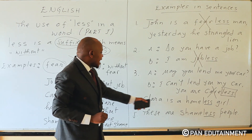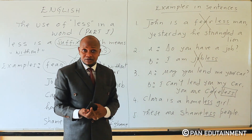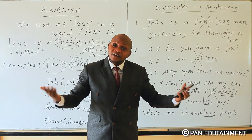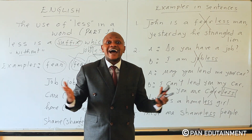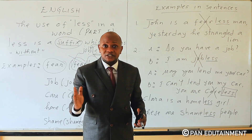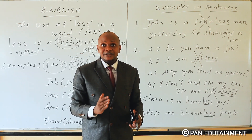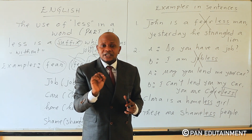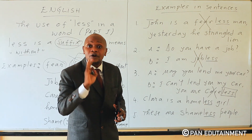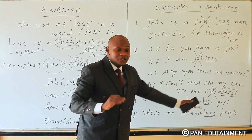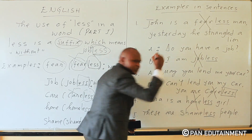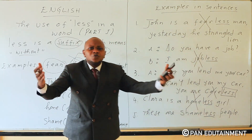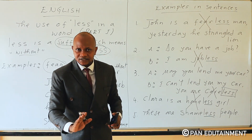Number four: Clara is a homeless girl. Clara is a homeless girl — this means that Clara doesn't have a home. She lives without a home.